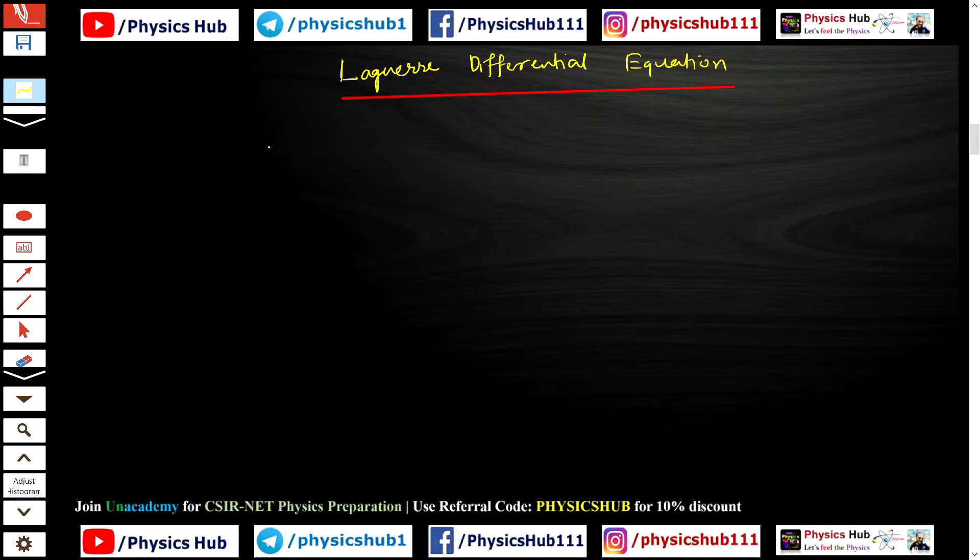The general form of this Laguerre differential equation is given by: x(d²y/dx²) + (1-x)(dy/dx) + ny = 0. This is the general form of the Laguerre differential equation.